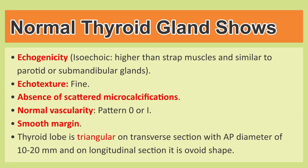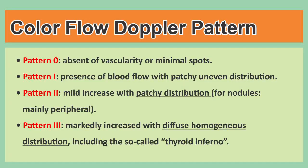Each lobe of the thyroid gland is triangular on transverse section, and its anteroposterior diameter is approximately 10 to 20 millimeters. On longitudinal section, it is ovoid in shape.